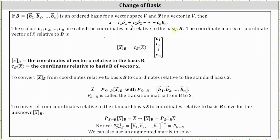The coordinate matrix or coordinate vector of vector x relative to B can be denoted two common ways. First, we have the coordinates of vector x relative to the basis B, or we have the coordinates relative to base B of vector x, which equals the column matrix containing the scalars c sub 1 through c sub n.